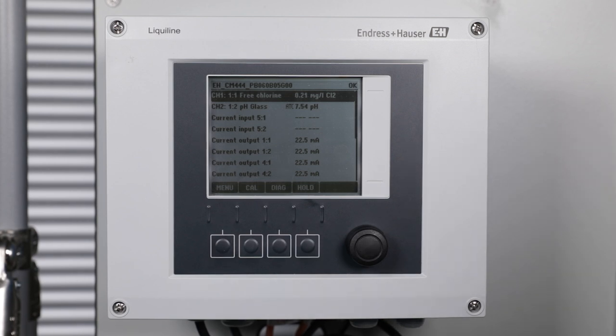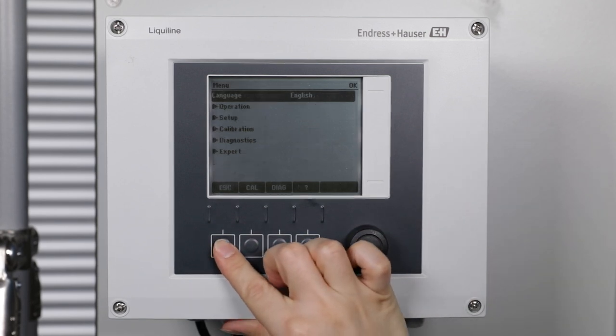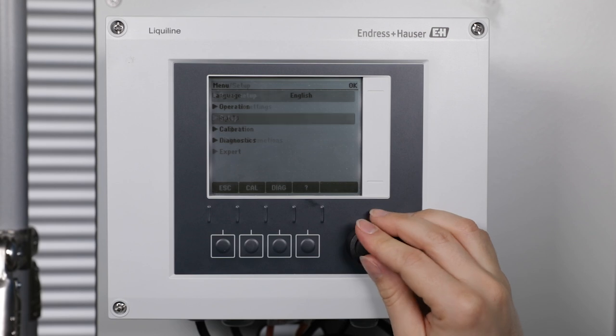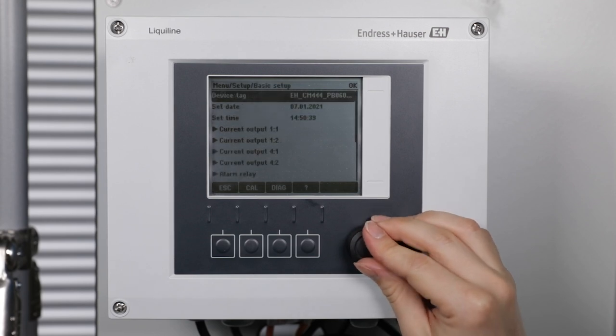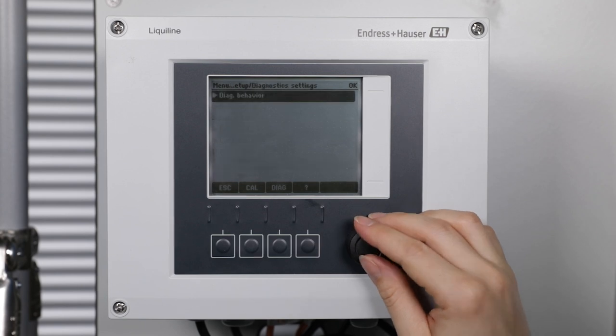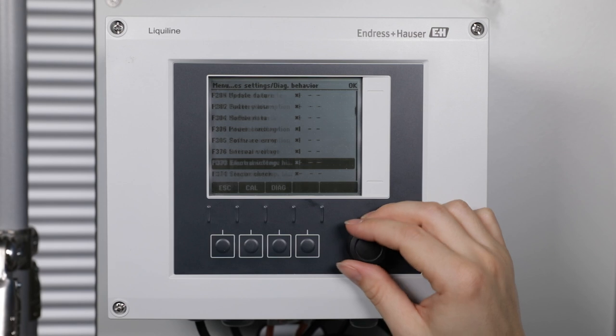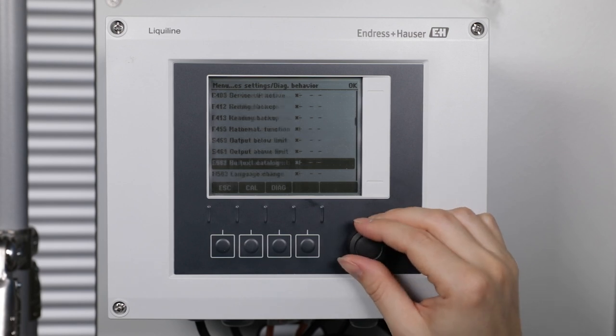To assign the flow switch for the status indication light, reconfigure the diagnostic message for the limit contactor S910 in the menu, setup, basic setup, diagnostic settings, diagnostic behavior, then down to S910 limit switches.